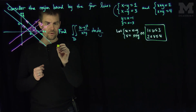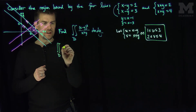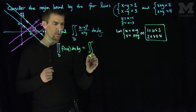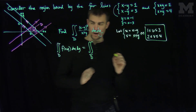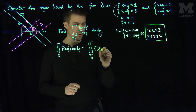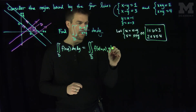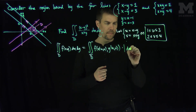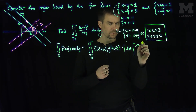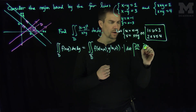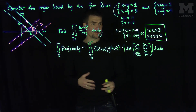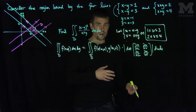We'll use the change of variable theorem, which states that the double integral over region d of f(x,y) dx dy equals the double integral over the new region d-tilde of f(x(u,v), y(u,v)) times the absolute value of the Jacobian determinant — that is, the determinant of the matrix of partial derivatives: ∂x/∂u, ∂x/∂v, ∂y/∂u, ∂y/∂v — times du dv.